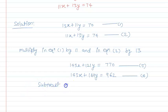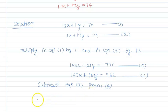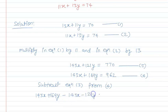Subtract equation 3 from equation 4: (143x + 169y) − (143x + 121y) = 962 − 770.